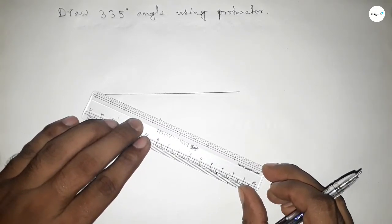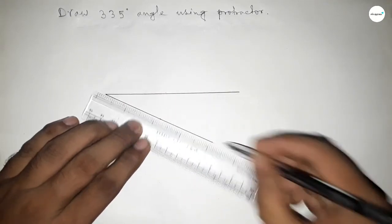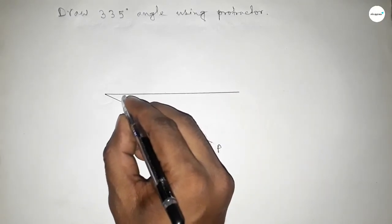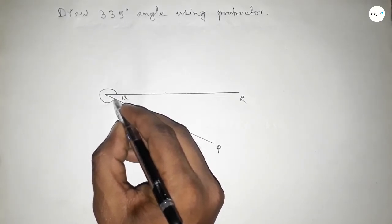Now join this to get 335 degrees. So we got a 335-degree angle. This is angle PQR.